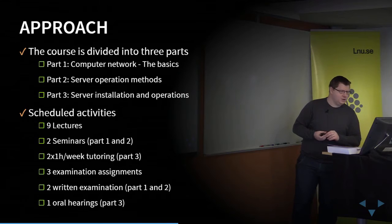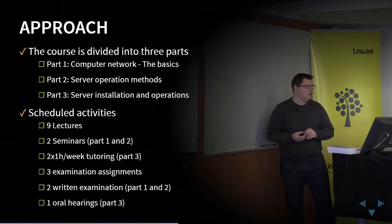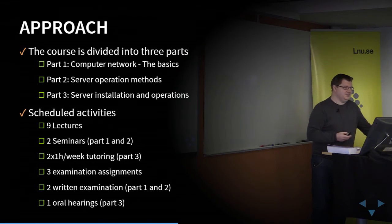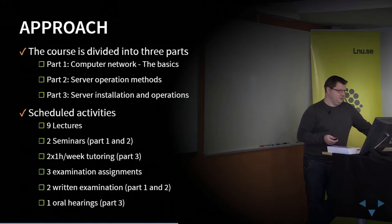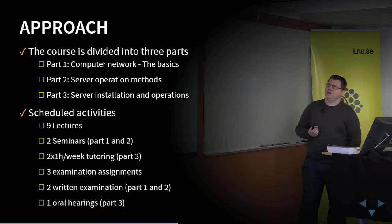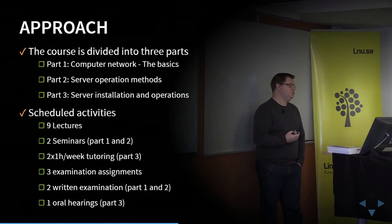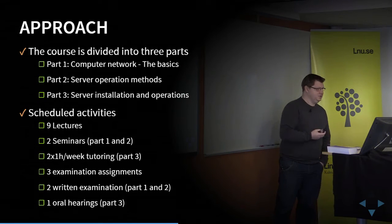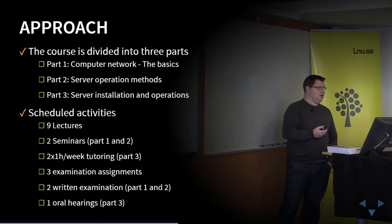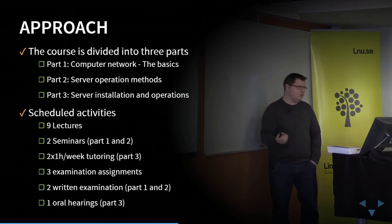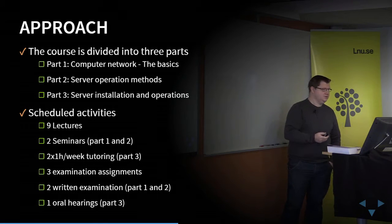We have divided these goals into three parts. The first one is computer networks — just the basics, because we can't go into too much depth. The second part is about how to choose a method of operation: how to manage our machines, operating systems, and so on. The third part is more practical — how to install, manage, and operate these systems.